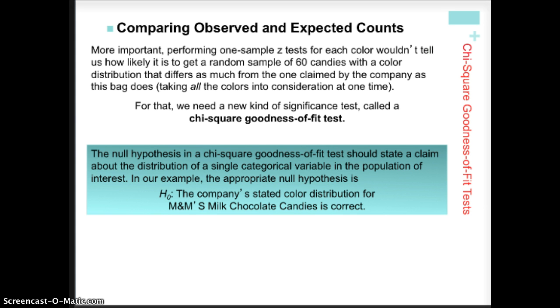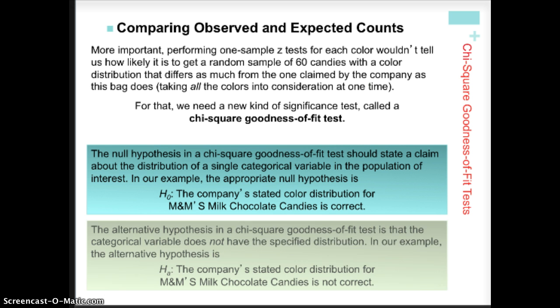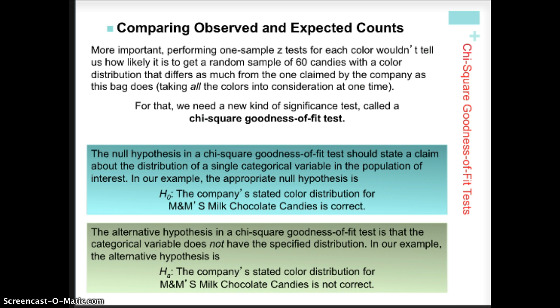And if we can look at what the null hypothesis is in symbols, it's going to be a little bit easier to phrase our conclude. So anyhow, our null hypothesis is the company's stated color distribution for the M&M chocolate candies is correct. And that means all the different proportions are what the company claims they are. Our alternative hypothesis is that they're incorrect. At least one of the proportions is incorrect.